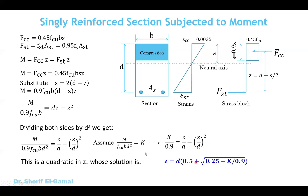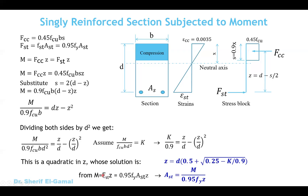Finally, to get the capacity of the section, we use m equals Fst times z. From this equation we can get the area of steel. Replacing Fst by 0.95 Fy times Ast multiplied by z and rearranging, the area of steel Ast equals the ultimate moment divided by 0.95 F yield times z. So the three steps to design a singly reinforced rectangular section are: calculate k, then calculate z, then calculate the area of steel.